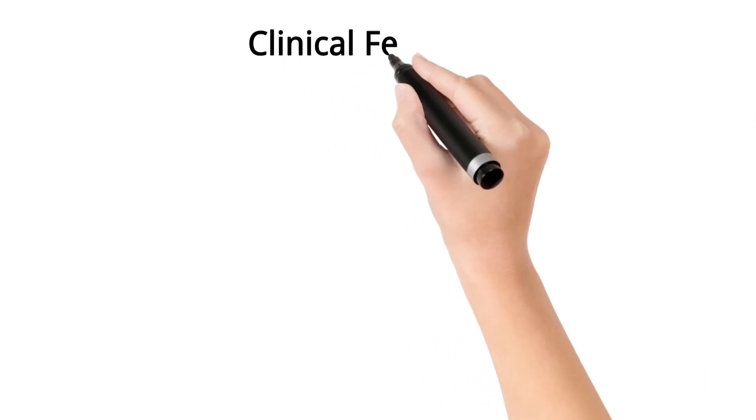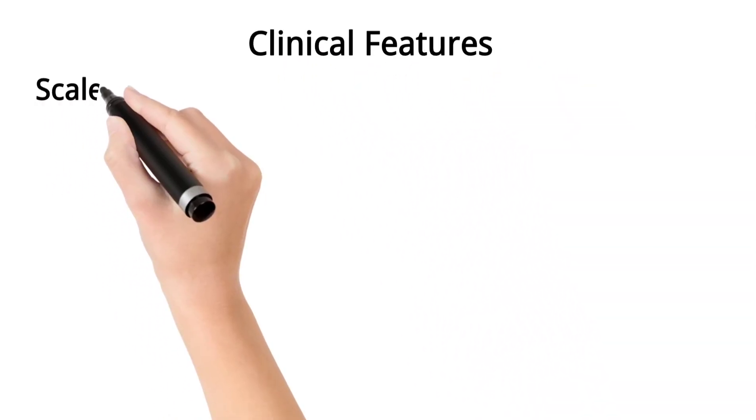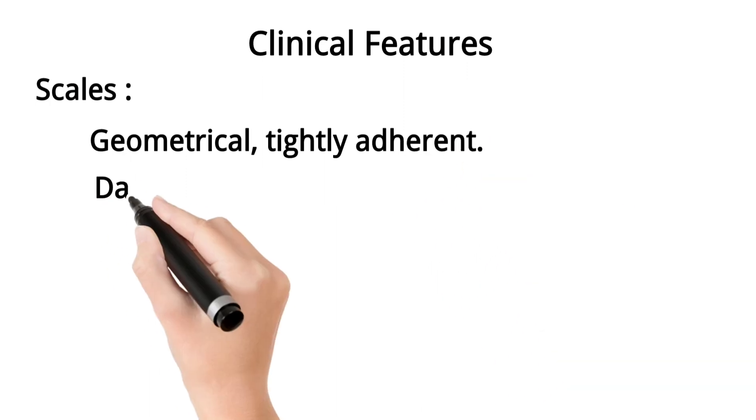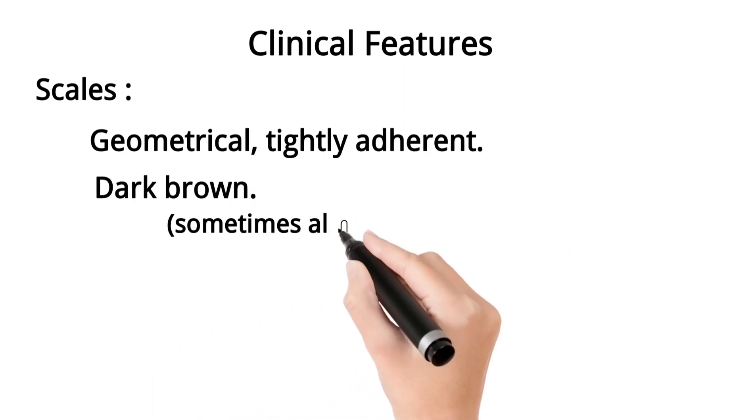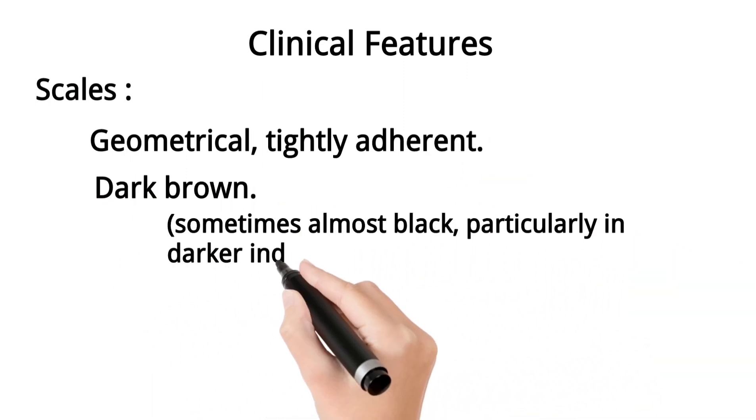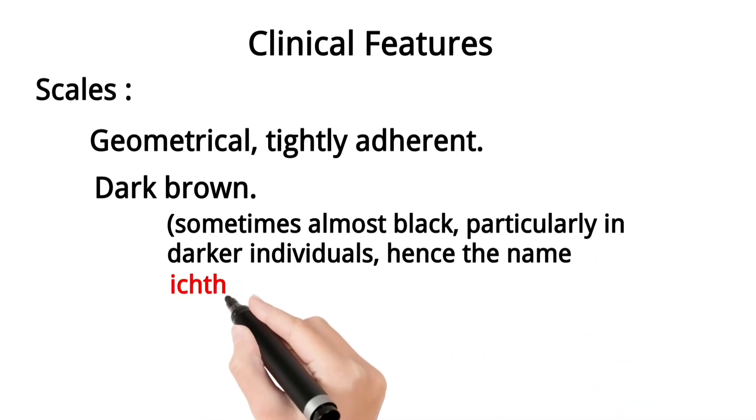It presents as geometrically shaped, tightly adherent, dark brown scales, sometimes almost black, particularly in darker individuals, hence also called ichthyosis nigra.